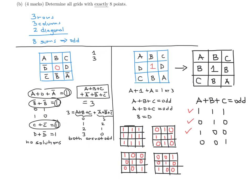Those are the four grids that have exactly eight points. You can verify by calculating the sums of the three columns, three rows, and two diagonals — all of those sums will indeed be odd.